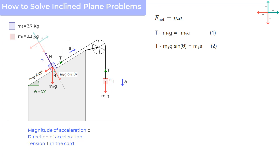Another observation we can make is that since this block is not moving in the vertical direction, its acceleration must be zero. And the normal reaction and m2g cos theta must be equal and cancelling each other.